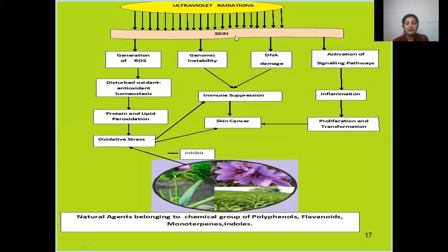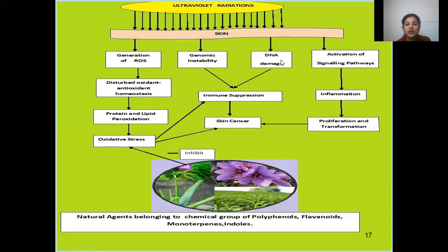This figure shows how natural agents belonging to different chemical groups prevent the deleterious effects of ultraviolet radiation. UV radiation falling on the skin generates reactive oxygen species (ROS), which disturbs the oxidant-antioxidant homeostasis balance of the body, further causing protein and lipid peroxidation leading to oxidative stress. UV also causes DNA damage and genomic instability, causing photoimmuno-suppression and skin cancer, and activates signaling pathways causing inflammatory reactions, proliferation, and transformation. These effects are inhibited by natural agents from plants belonging to the chemical groups of polyphenols, flavonoids, monoterpenes, and indoles.